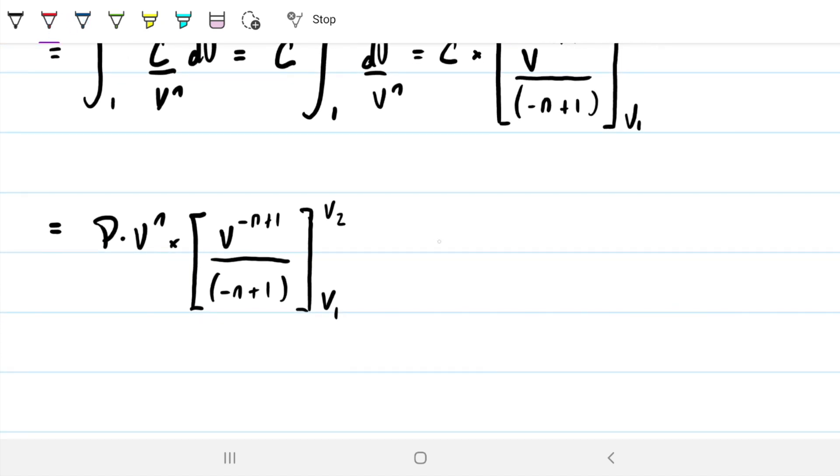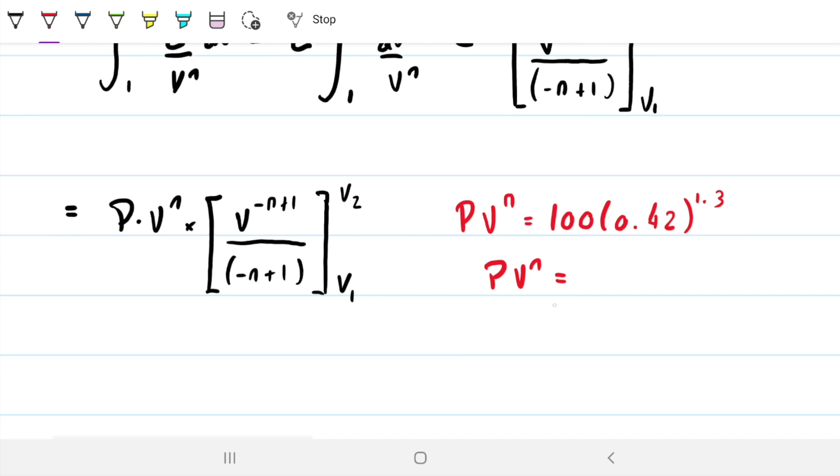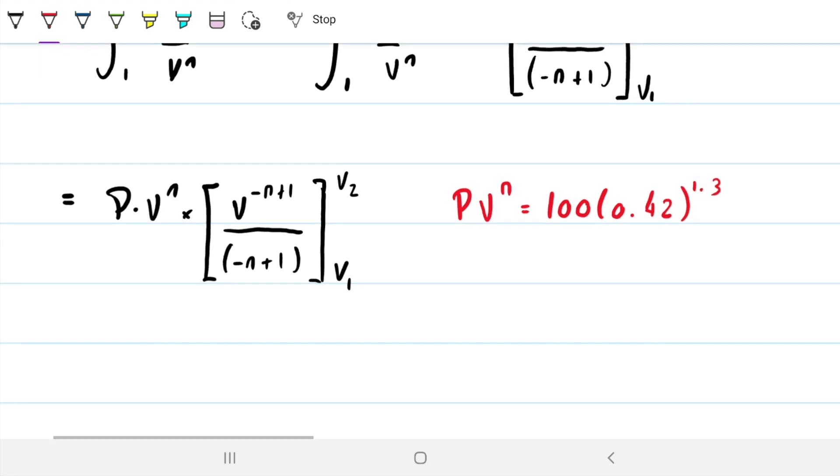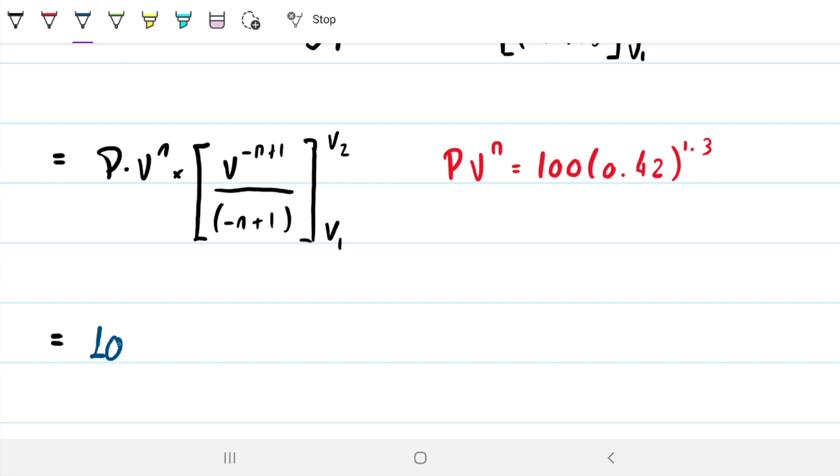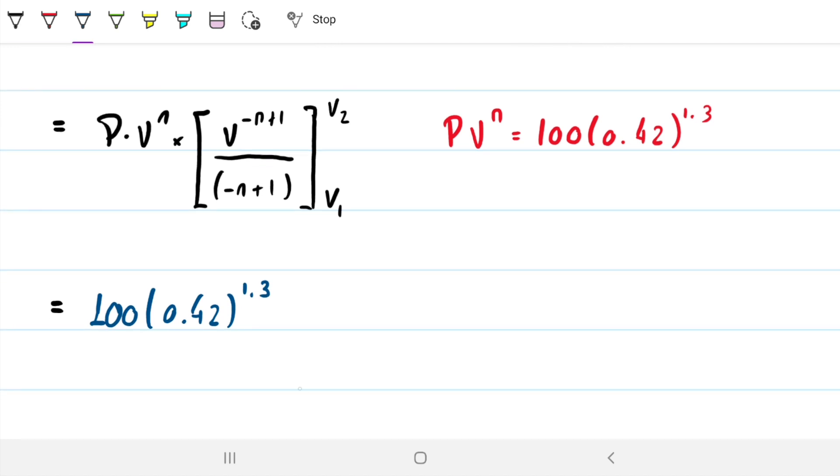What do we have? The constant PVⁿ - for instance, 100 times 0.42 to the 1.3. Mind you that because this is a constant, I could have used P₂V₂: 300 and 0.18, same result. What else? We have n, we have the two volumes. So plug and play. 100 times 0.42^1.3, multiply that by [0.18^(1-1.3) - 0.42^(1-1.3)] divided by (1-1.3). Let me remind ourselves: V₁ is 0.42 and V₂ is 0.18. That's where these came from.